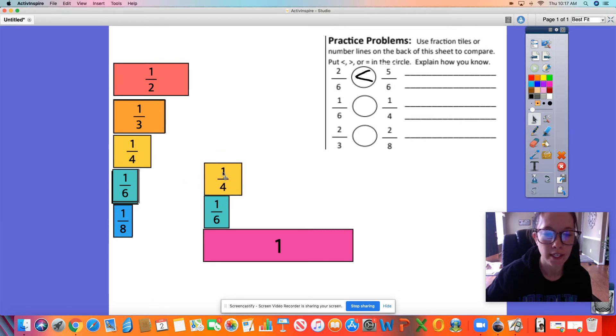Now in this one, I'm counting the same number of parts, but my parts are different sizes. I can see here with my visual of the fraction tiles that 1 out of 4 parts is a larger piece than 1 out of 6 parts. So on my inequality statement, 1 out of 6 is less than 1 out of 4.